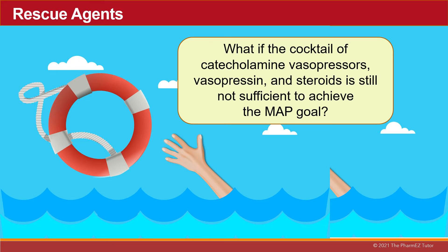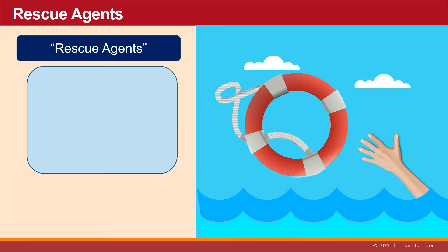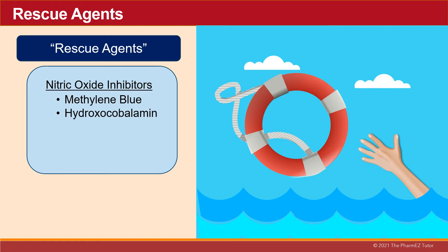What if the cocktail of catecholamine vasopressors, vasopressin, and steroids is still not sufficient to achieve the MAP goal? We now need to consider using rescue agents. Rescue agents include the nitric oxide inhibitors methylene blue and hydroxylcobalamin, and the vitamin cofactors thiamine and ascorbic acid.